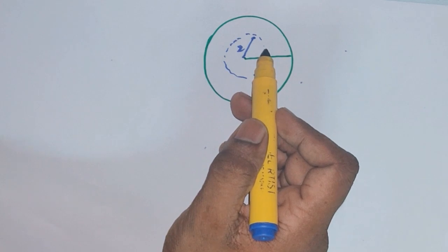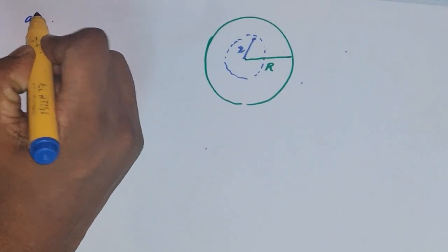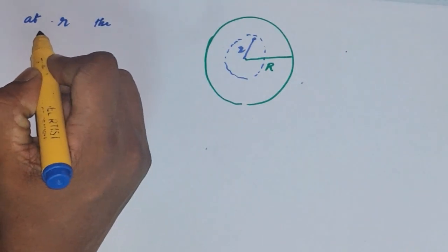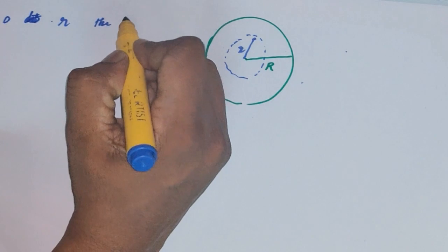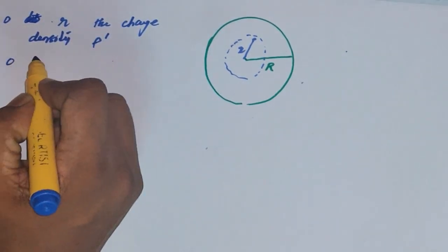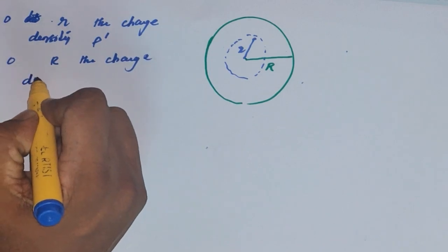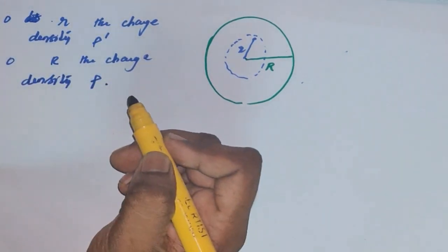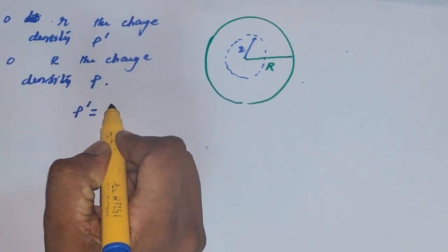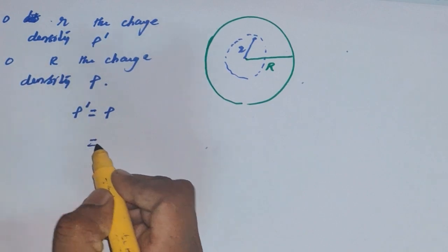For that we are going to use the charge density concept. The charge density inside the sphere at radius r — it is in general rho, but the charge density is always constant because it is a uniform charge distribution. So the charge density up to r is equal to the charge density of the whole sphere of radius R.